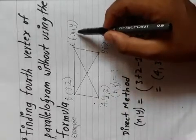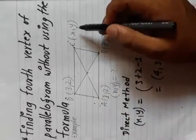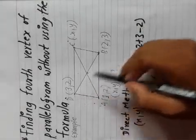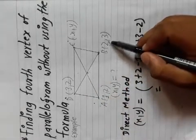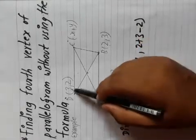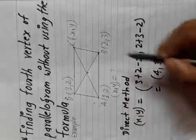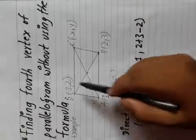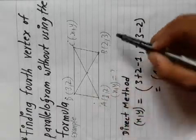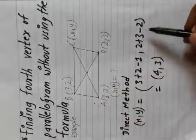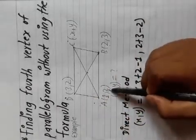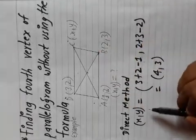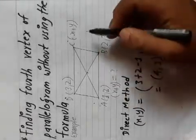The direct method is: we have to add two given sides — three plus two — and subtract the opposite side of the unknown side, minus one. For y: two plus three minus two, where the opposite of y is used. We can directly get the answer for the fourth vertex which is unknown to us.